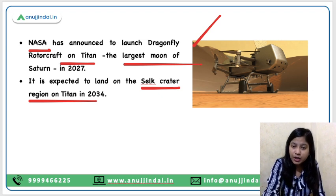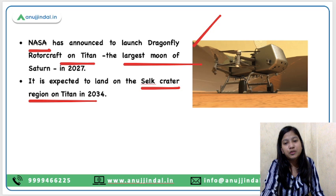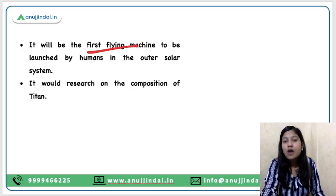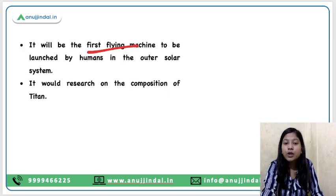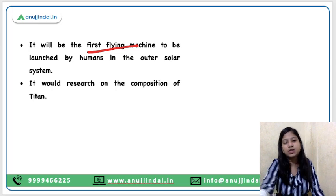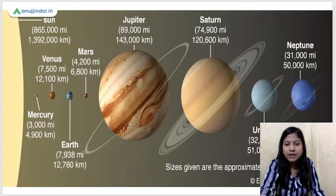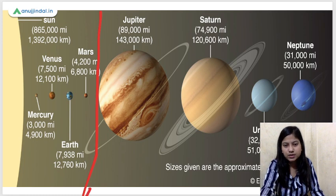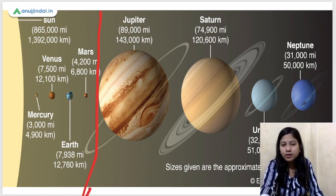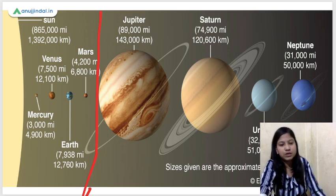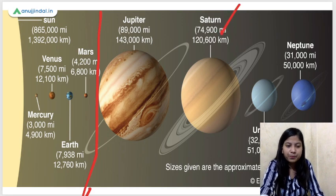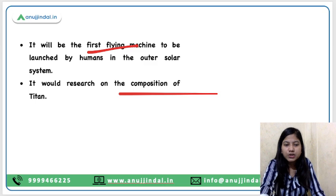One more speciality of this rotorcraft: it is going to be the first flying machine launched by humans in the outer solar system. What is the outer solar system? Everything that is beyond Mars is the outer solar system. So after Mars, we have Jupiter, Saturn, Uranus, and Neptune coming in the outer solar system. The Dragonfly is being launched on Saturn's moon, and it is going to research the composition of Titan.